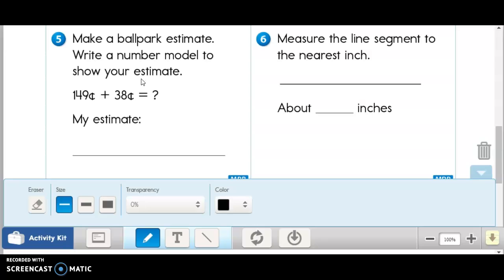Here we're going to round to the nearest ten. So I look here, one hundred forty-nine. And I know that forty-nine is closest to fifty. So that becomes one hundred fifty plus thirty-eight.